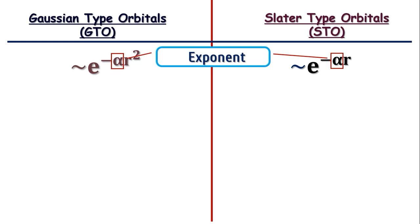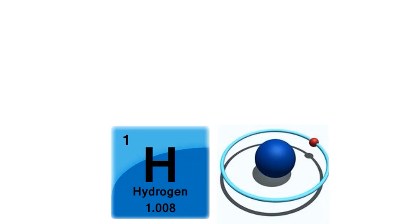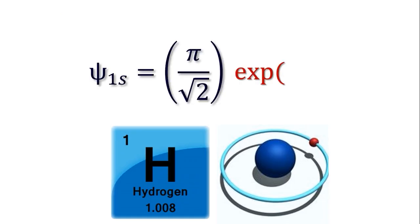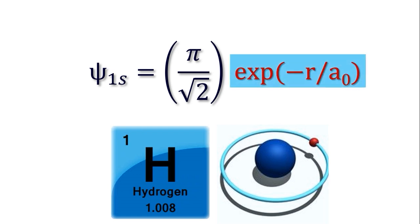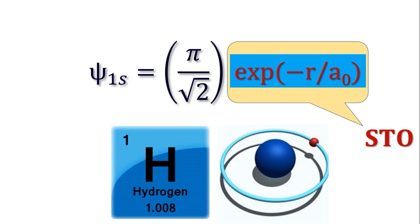Now let's take a look at the 1s orbital of the hydrogen atom. It has the form psi 1s equal to pi by root 2, exponential of minus r by a0, where a0 is the Bohr radius and has the value of 0.529 times 10 to the power minus 10 meters. Clearly, it is a Slater type orbital and not Gaussian.